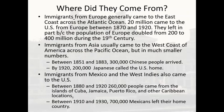Immigrants also came from Mexico and the West Indies. Between 1880 and 1920, 260,000 people came from the islands of Cuba, Jamaica, Puerto Rico, and other Caribbean locations. Between 1910 and 1930, 700,000 Mexicans left their home country. The immigration we see today from Latin America and Mexico is nothing new — it's been going on for a very long time in our country.